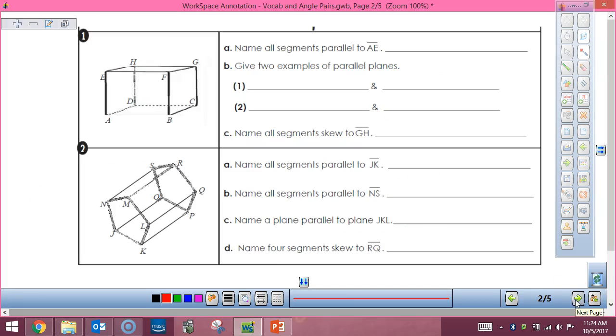So if we look at this, all segments are parallel to AE. So if I'm looking at AE right here. Let's say this line right here, what's going to be parallel to AE? DH. So that one back there is going to work. DH, what else? BF or FB, either one. That one works. And CG. Good.